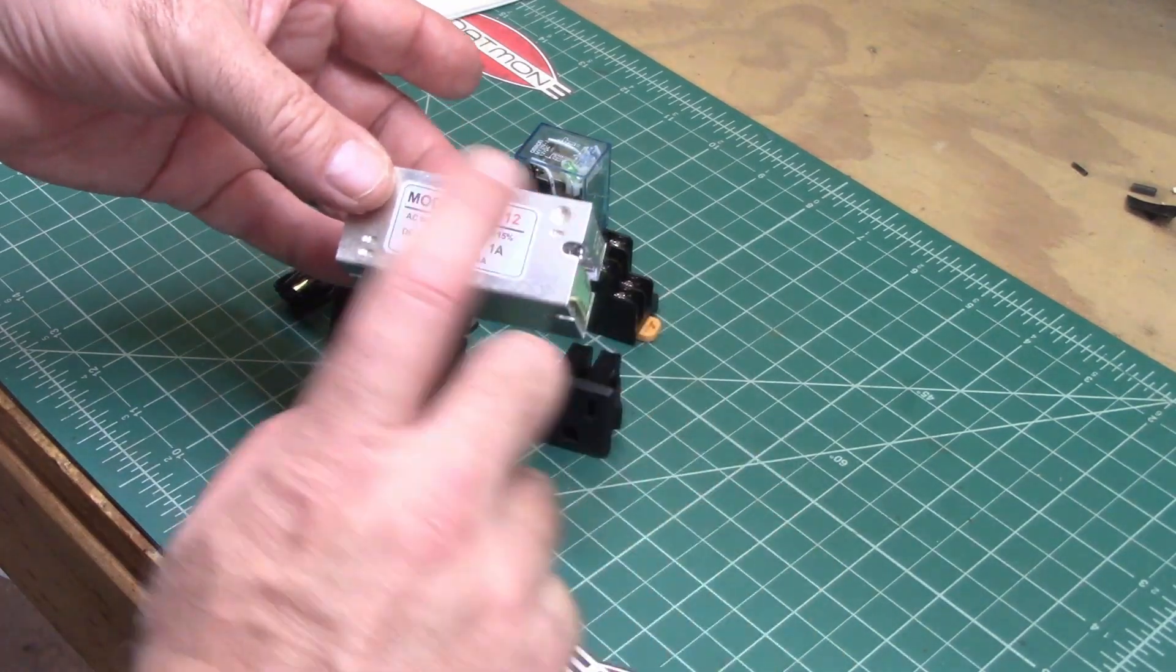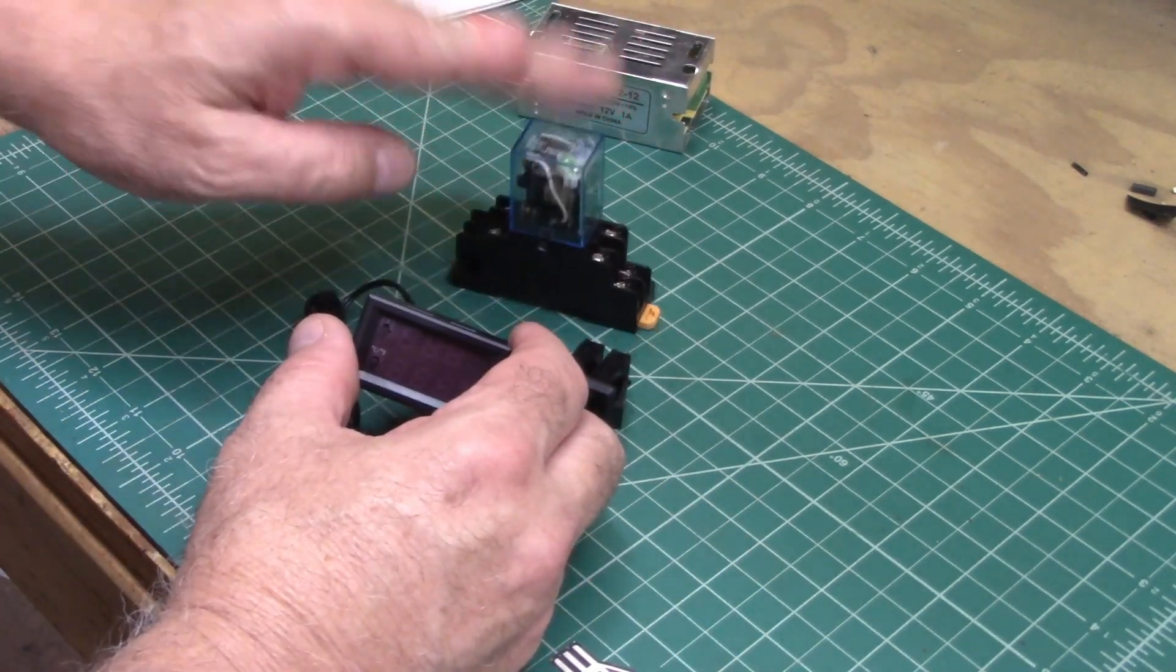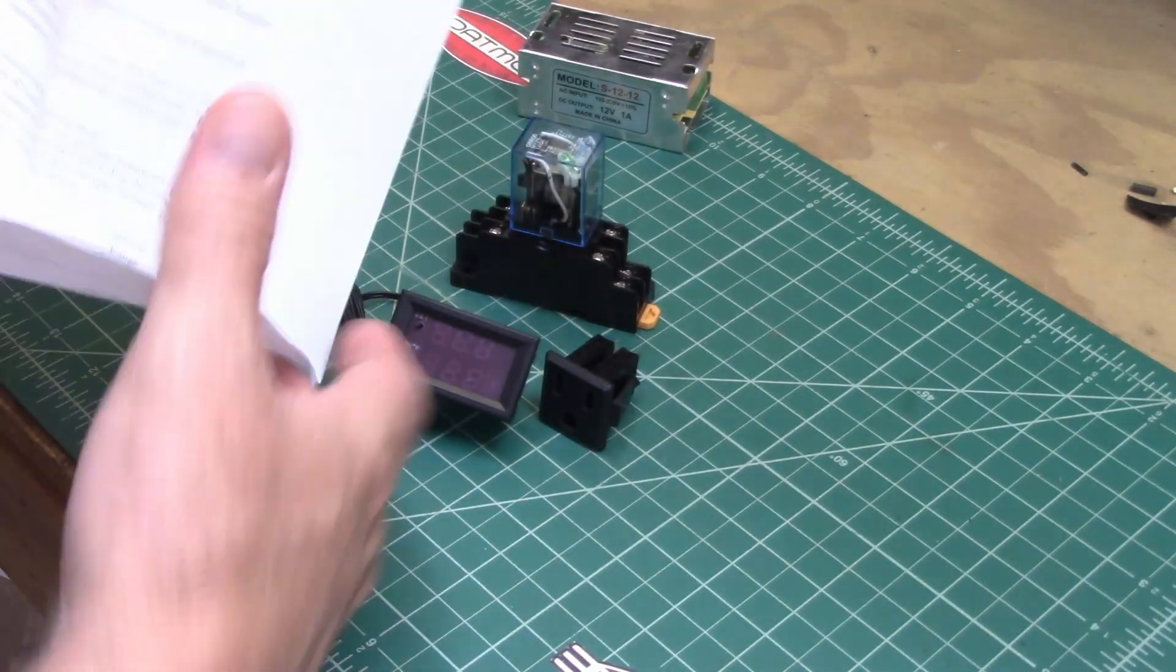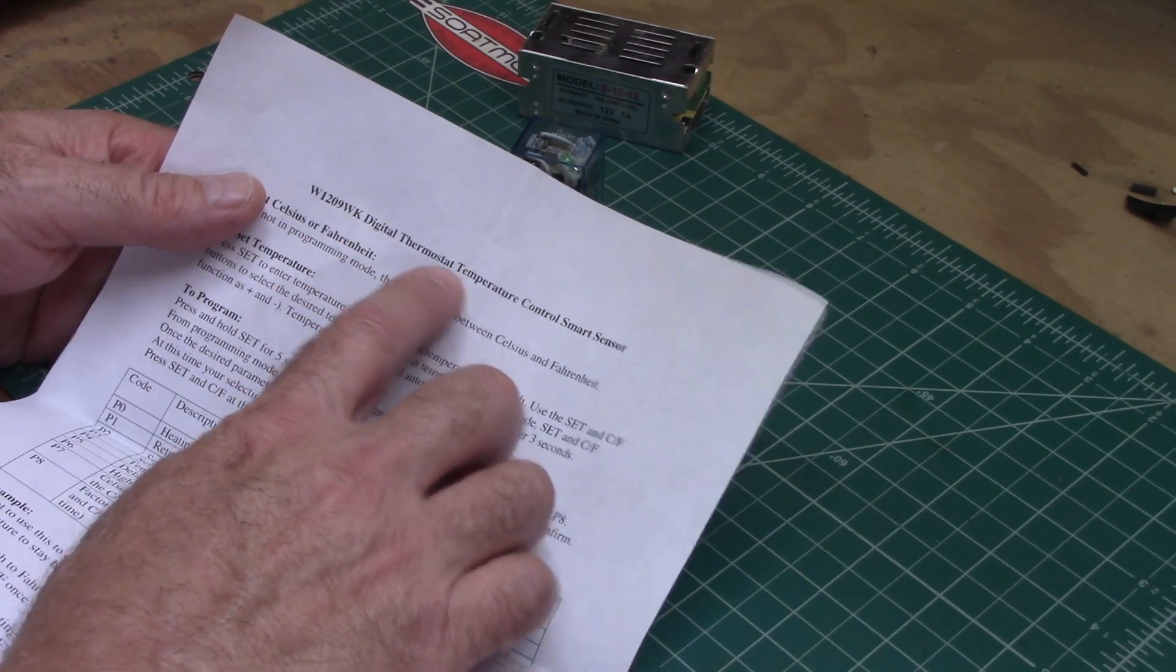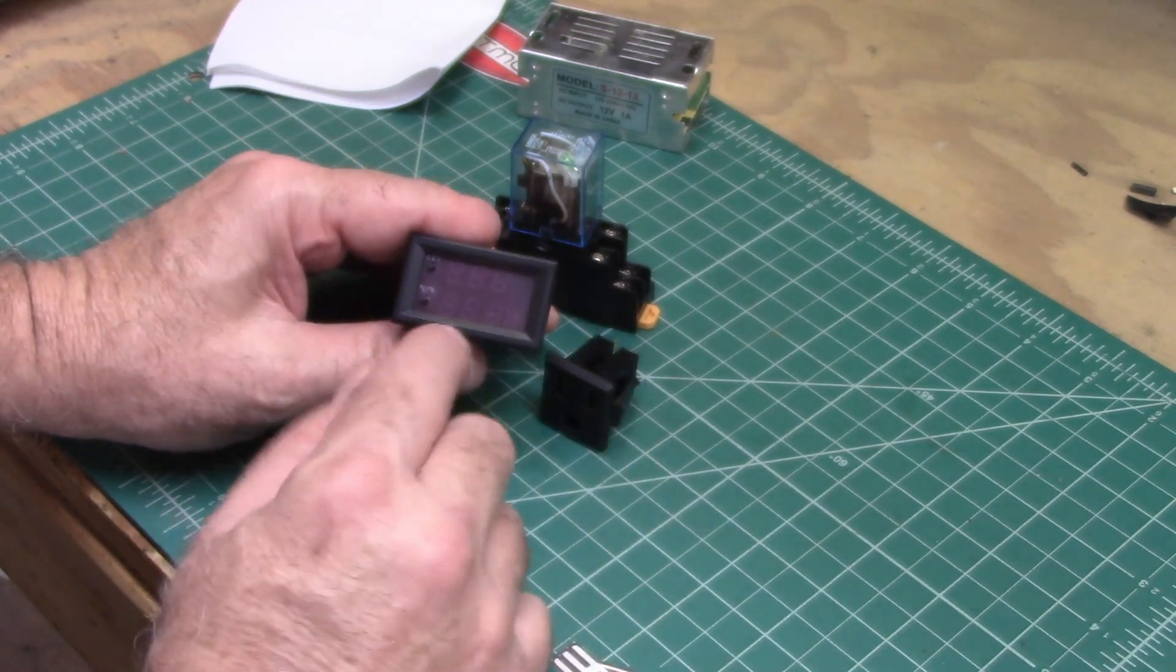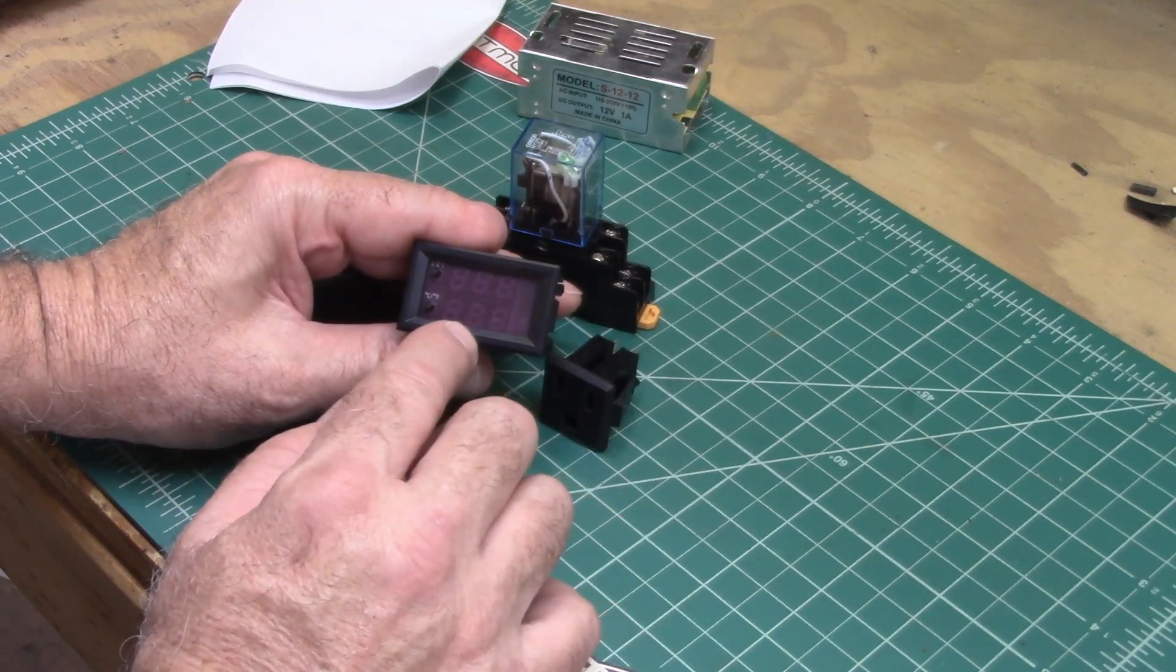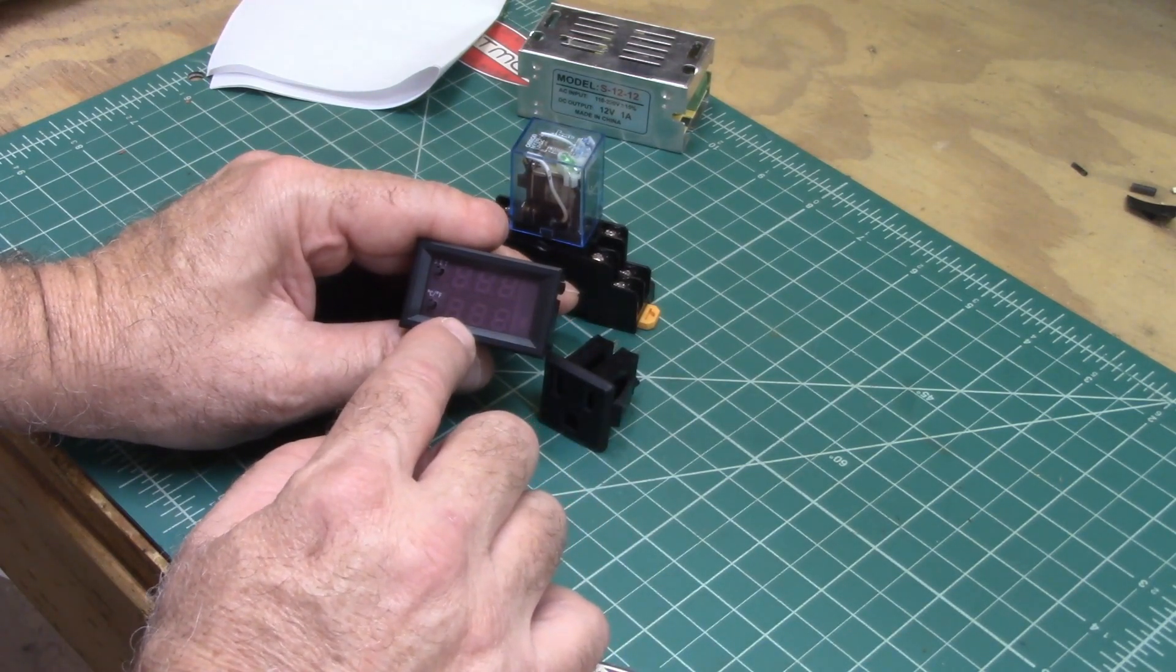The 12 volts you just need to power this thermostat right here, and also your relay is going to be 12 volts too. This little thermostat, I'll link all this in the description for you so you'll be able to find it. This is a W1209 WK digital thermostat, and they're really versatile little units. I'll do another video on how to set these up and change the settings on them because it's kind of tedious and boring, so I'll save that for another video.